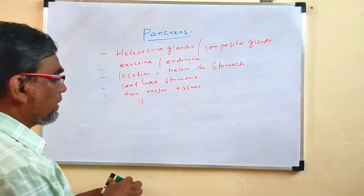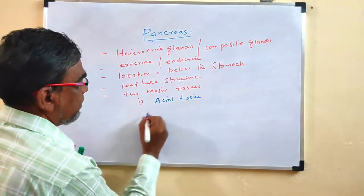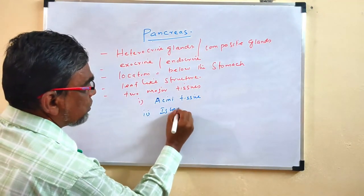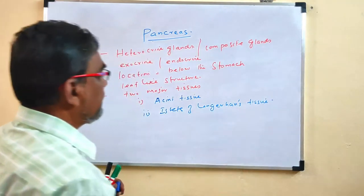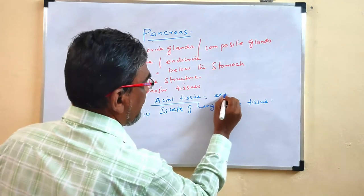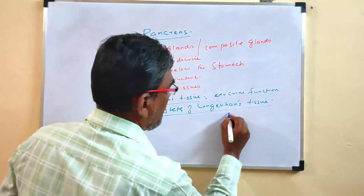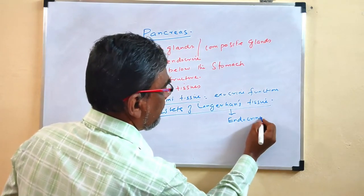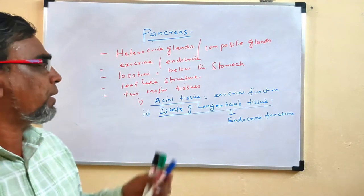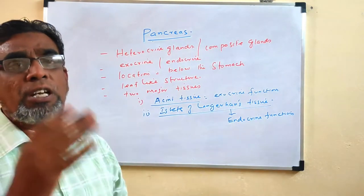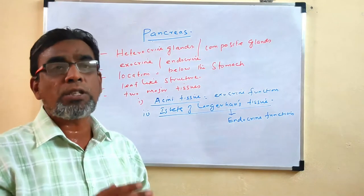The first tissue is called acini tissues. The second one is called islets of Langerhans tissues. The acini tissues perform exocrine function — they secrete enzymes which are helpful for digestion. Whereas the islets of Langerhans tissues secrete various hormones. We will see in detail what the hormones are and what roles they play.